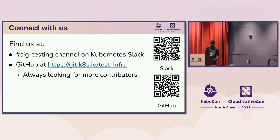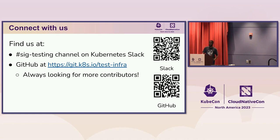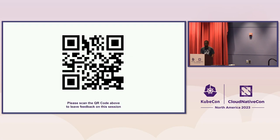Thank you so much, everybody. One more thing I forgot to mention — I'm looking for more contributors. If you're interested in this space, I'm looking forward to hearing from you. We have a GitHub repository called kubernetes/test-infra with a lot of issues. Please scan the QR code. We can also be found in the Kubernetes Slack — SIG Testing is the place to go. Come along, bring some questions. We have some well-defined good first issues to work on. Thank you so much, everybody.